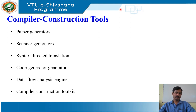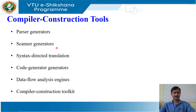The most successful tools are those that hide the details of the generation algorithm and produce components that can be easily integrated into the remainder of the compiler. Some commonly used compiler construction tools include parser generators, scanner generators, syntax directed translation, code generators, data flow analysis engines and compiler construction toolkit.